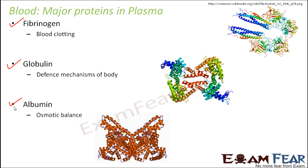So these are the various proteins present in plasma. Around 8% of plasma is made up of proteins — those proteins are fibrinogen, globulin, and albumin — some fibrinogen, some globulin, some albumin — and that is what plasma is composed of.